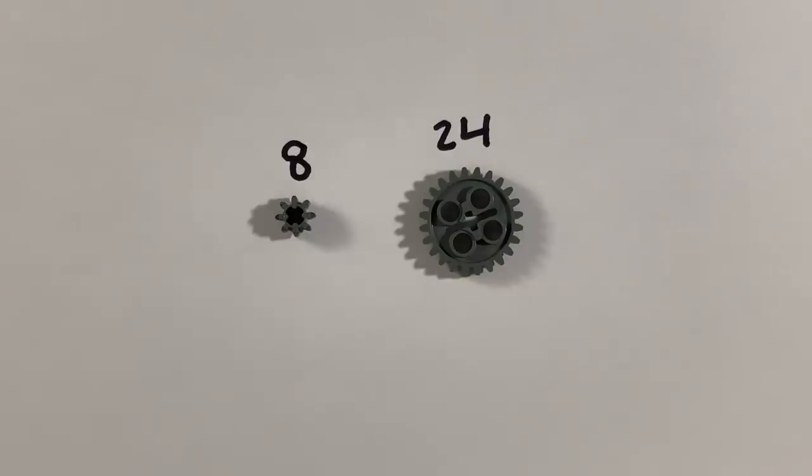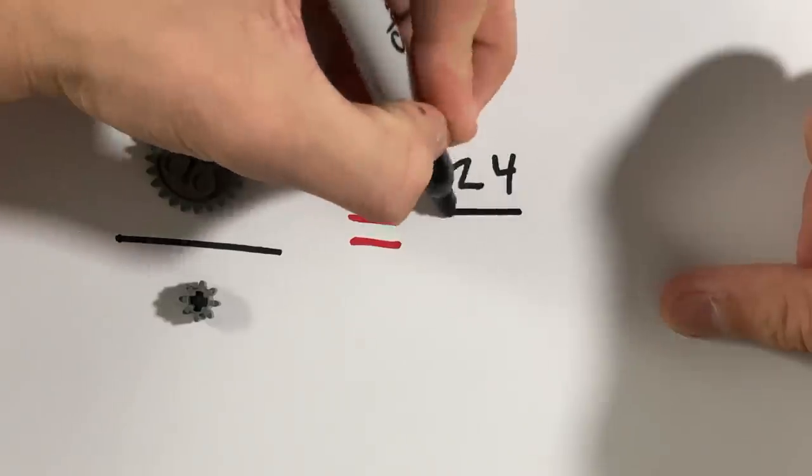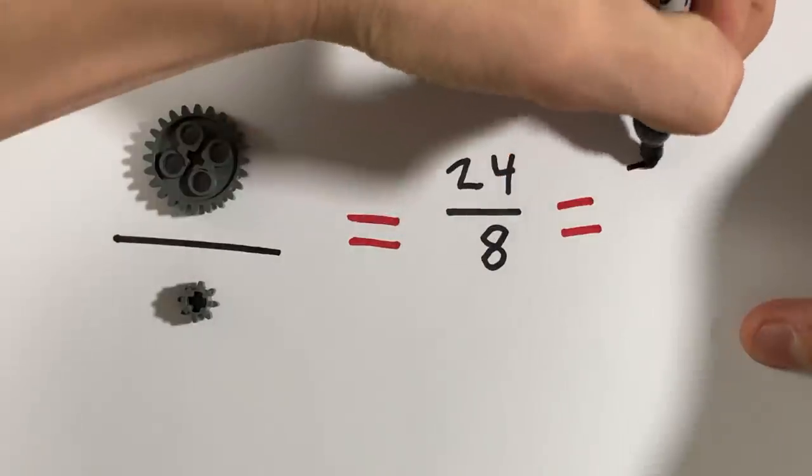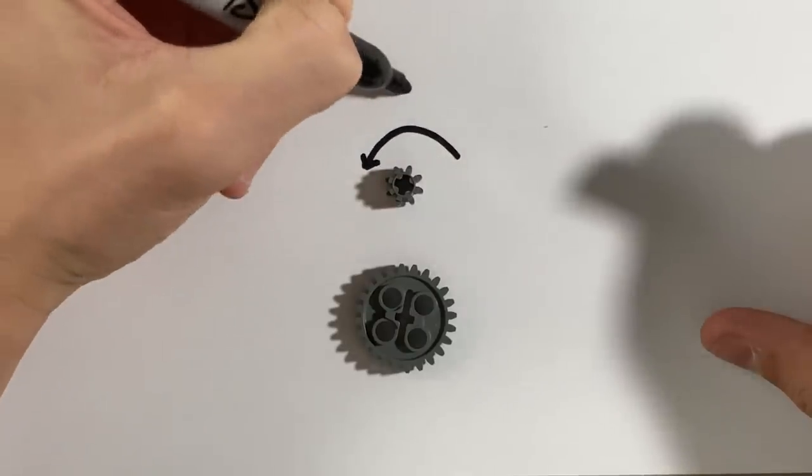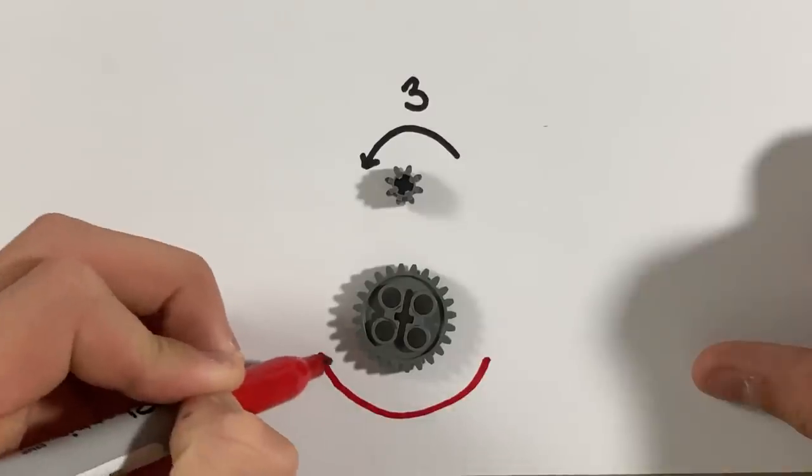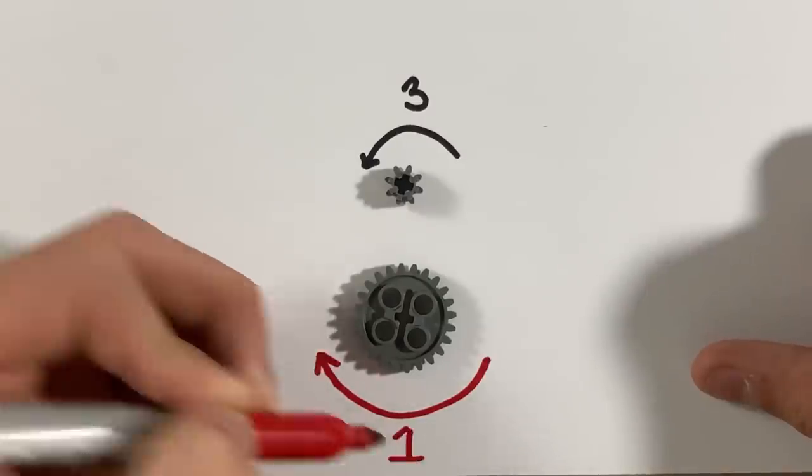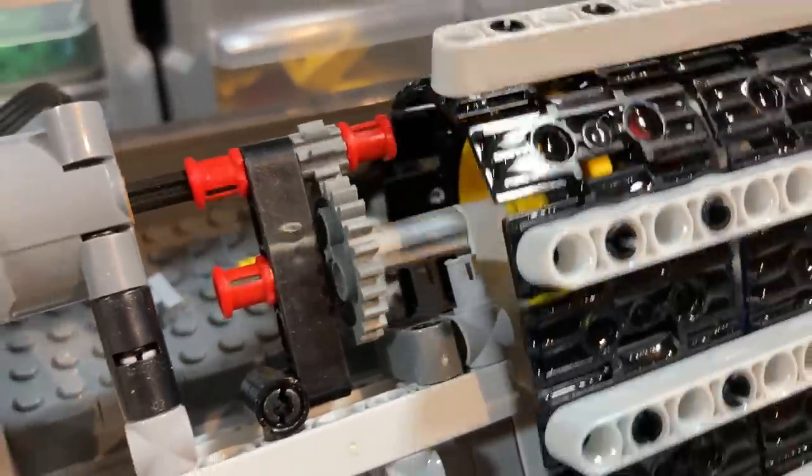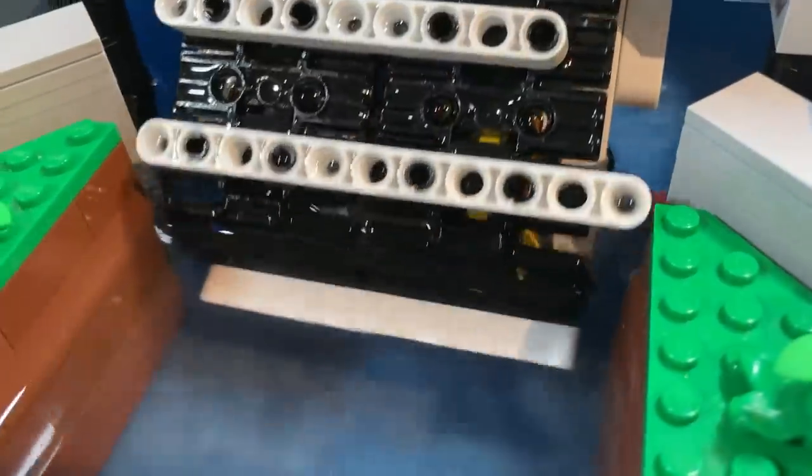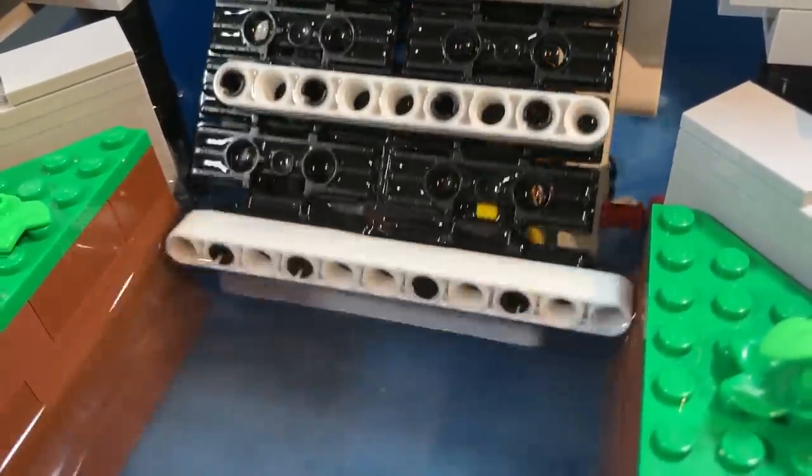And our driven gear, the one being turned by our driver, has 24 teeth. If we then put the driver over our driven, or 24 over 8, we get 3. Meaning for every 3 rotations on the driver gear, there is a single rotation on the driven. My hope was that this would slow down the rotation speed of the conveyor belt enough that there would be no push away from it in the water.